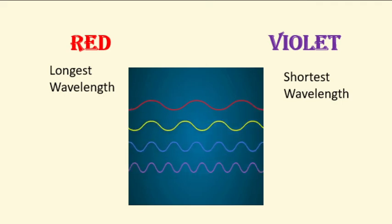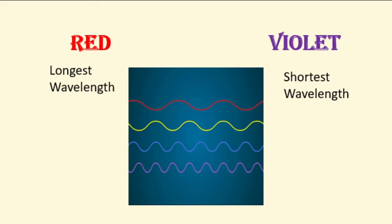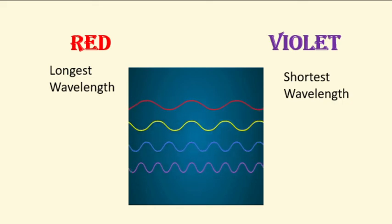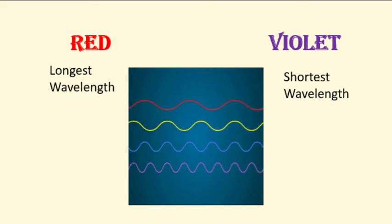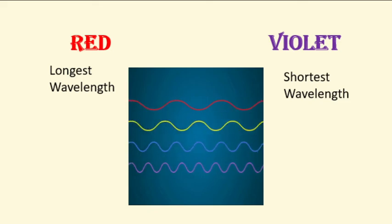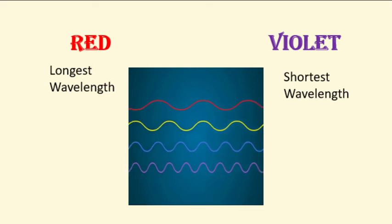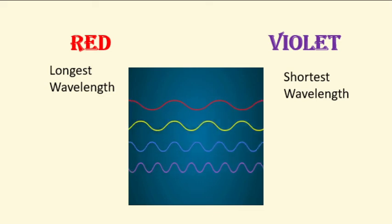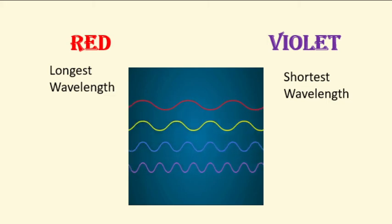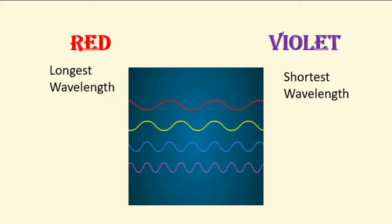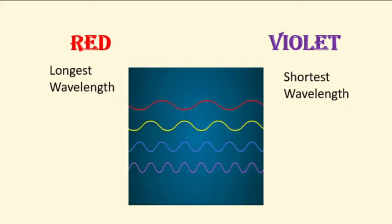Always remember that the shorter the wavelength, the more harmful it is, as it can more easily penetrate or enter our body. Therefore, since violet has the shortest wavelength, it is the most harmful color, and red is the most safe or least harmful color in the visible light spectrum.